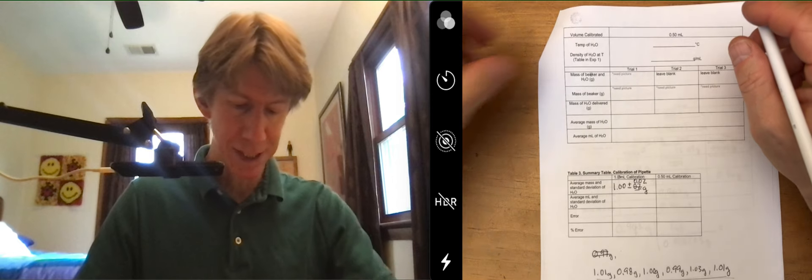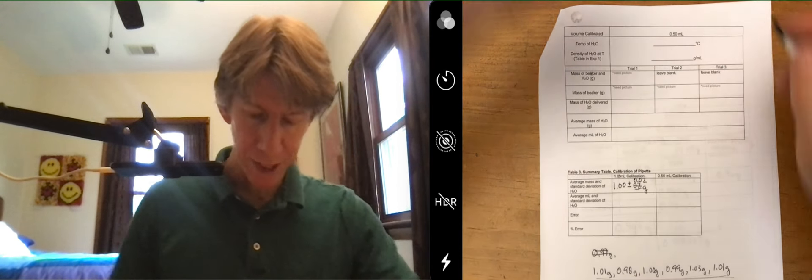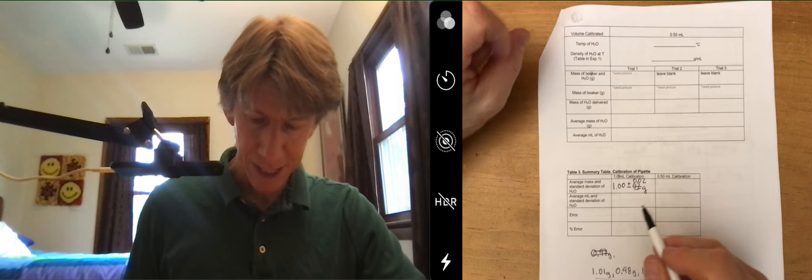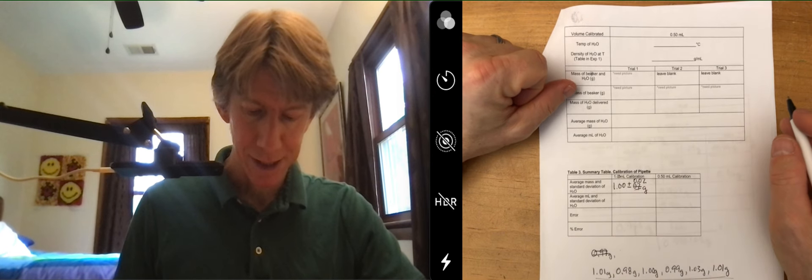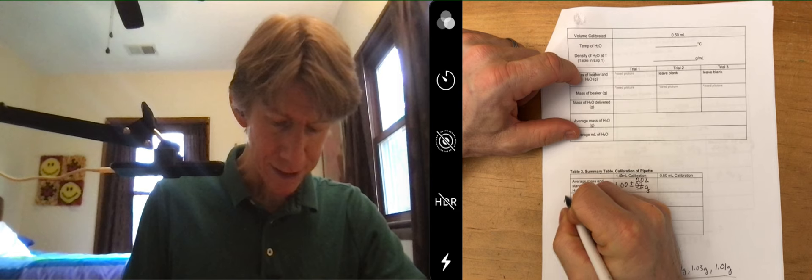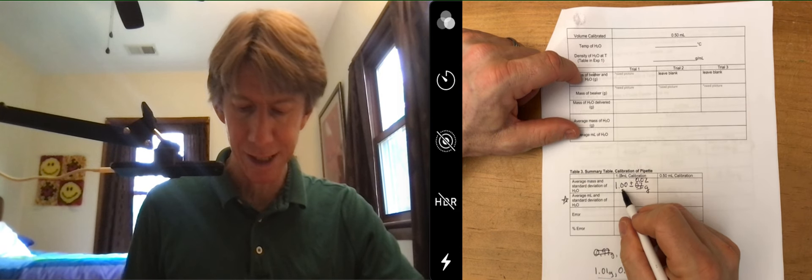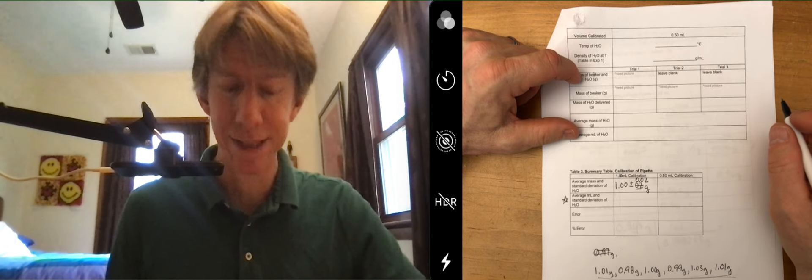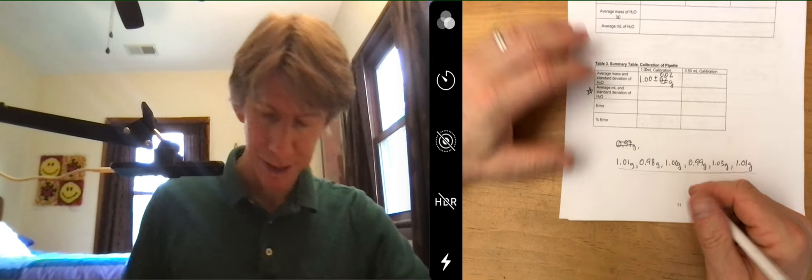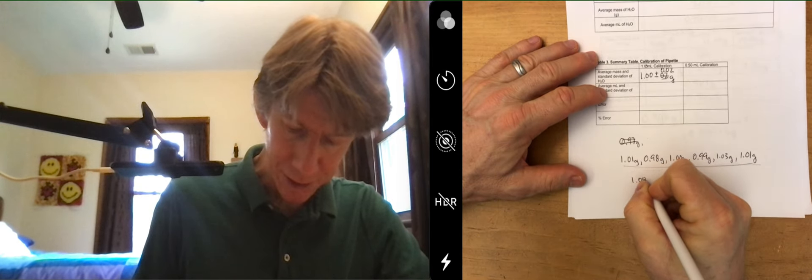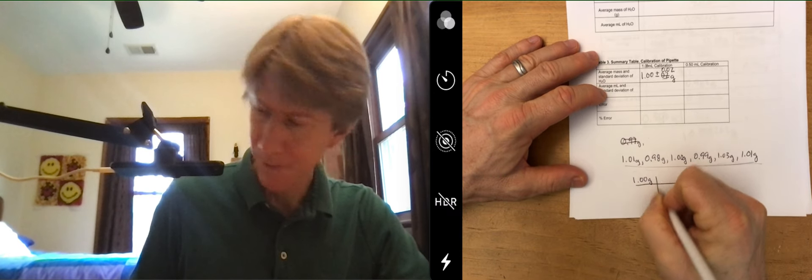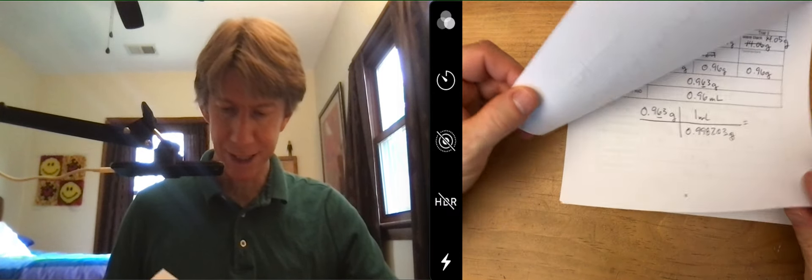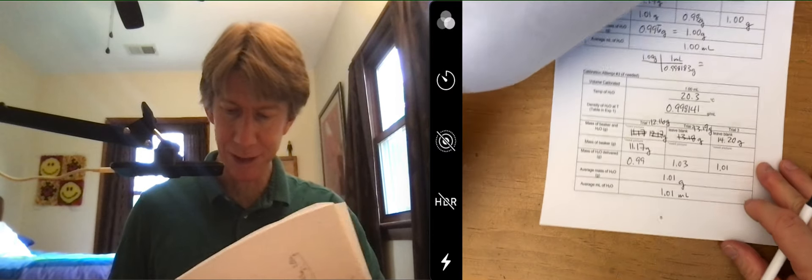At this point, let's see, average milliliters and standard deviation of H2O. Okay, so we have our average grams and standard deviation. Now to get this next column here you're going to take each of these values and divide it by the density. So I have 1.00 grams, I have my density.